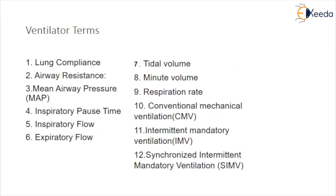Key ventilator terms include lung compliance, which is the ratio of volume delivered to the pressure rise during the inspiratory phase, typically expressed as liters per centimeter H₂O. Lung compliance is the ability of the alveoli and lung tissue to expand on inspiration; the lungs should stretch easily to ensure sufficient air intake. Airway resistance refers to the ease with which air flows through the tubular respiratory structures; higher resistance occurs in smaller tubes such as bronchioles and alveoli that are not emptied properly. Mean airway pressure is an integral taken over one complete cycle expressing the average airway pressure.